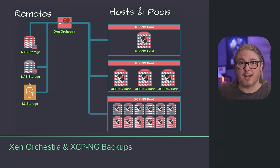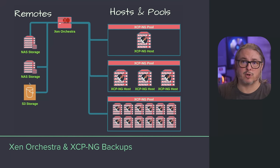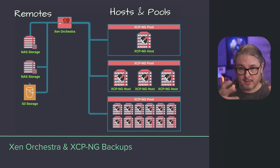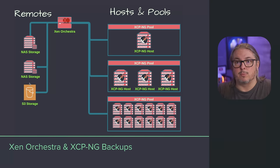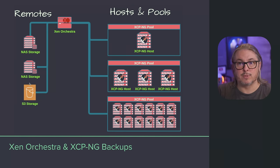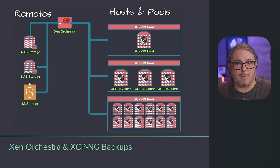I want to talk about the chicken and egg problem when you first load an XCPNG host and then have to get Xen Orchestra on there. You have two options. First option is really simple: you can load XOA, the paid version, set up for a 30-day trial or even use it unregistered — they have pretty basic functionality for free. Then you can use that to build a VM on one of your hosts and build out the full XO from sources. I don't recommend using the Windows tool — that's not a tool I'd recommend here in 2024.